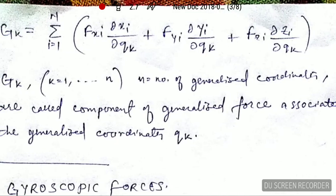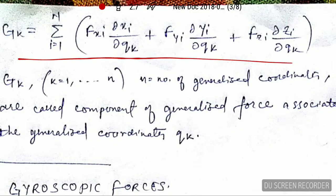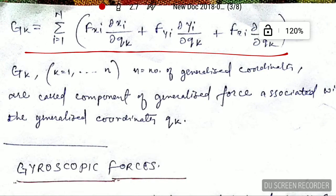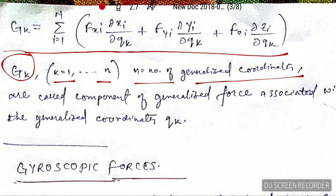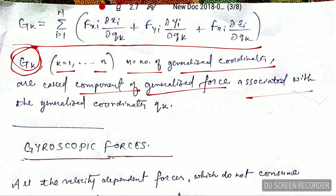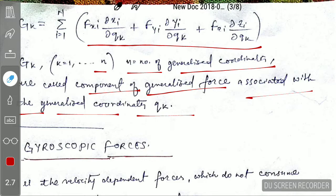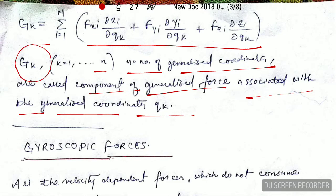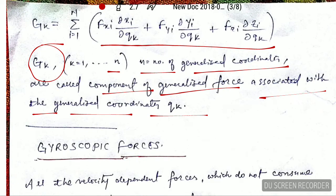Here the dot product has been completed. The quantity G_k, where k runs from k equals 1 to k equals n (n being the number of generalized coordinates), is called the component of the generalized force associated with the generalized coordinate q_k. So G_k are the components of the generalized forces associated with the generalized coordinate q_k.